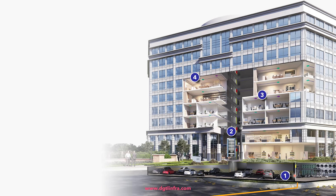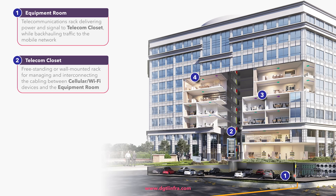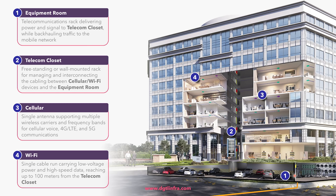Let's use an example of a typical office building to understand the key components of distributed antenna systems. The office building's distributed antenna system has four key components. Number one is the equipment room — a telecommunications rack delivering power and signal to the telecom closet while backhauling traffic to the mobile network. Number two is the telecom closet — a free-standing or wall-mounted rack for managing and interconnecting cabling between cellular and Wi-Fi devices and the equipment room. Number three are cellular devices — a single antenna supporting multiple wireless carriers and frequency bands for cellular voice, 4G LTE, and 5G communications. Fourth is Wi-Fi — a single cable run carrying low voltage power and high-speed data, reaching up to 100 meters from the telecom closet.